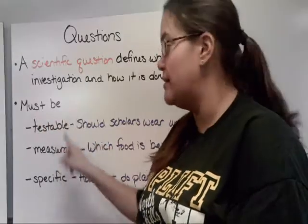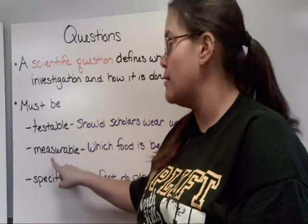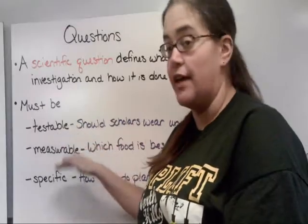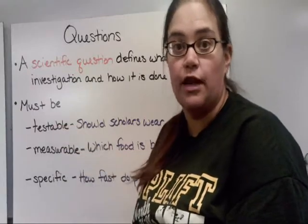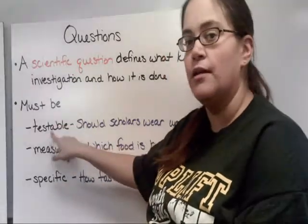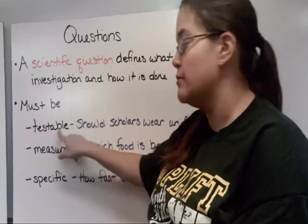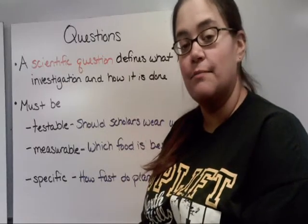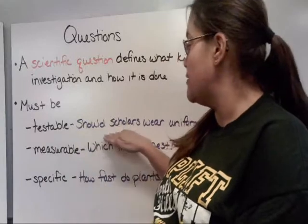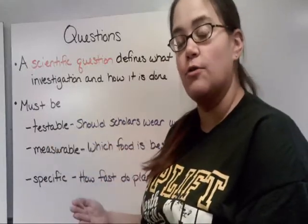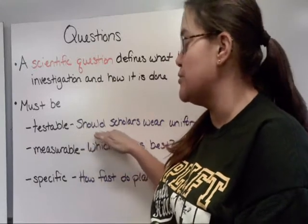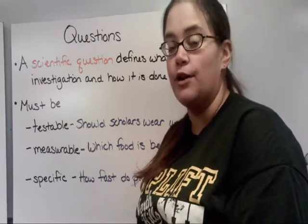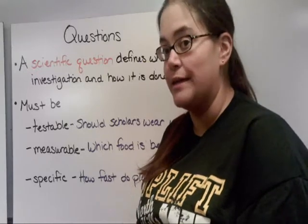A scientific question must have these three things: it must be testable, measurable, and specific. For example, 'Should scholars wear uniforms?' is not testable — there's no way to conduct an investigation and get an answer. A testable question instead would be: 'What effect do uniforms have on scholar scores?' — you'd test people wearing uniforms versus not and see if there's a difference in test scores.